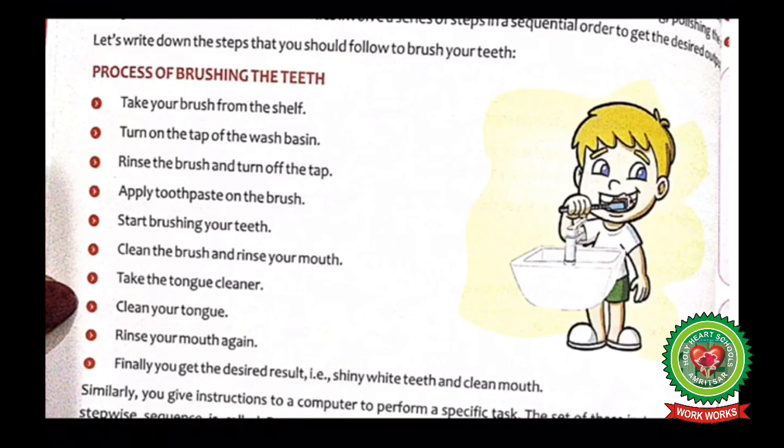First step will be take your brush from the shelf, turn on the tap of the wash basin, then rinse the brush and turn off the tap. After that, apply toothpaste on the brush, then start brushing your teeth, then clean the brush and rinse your mouth, then take the tongue cleaner, clean your tongue, then rinse your mouth again.